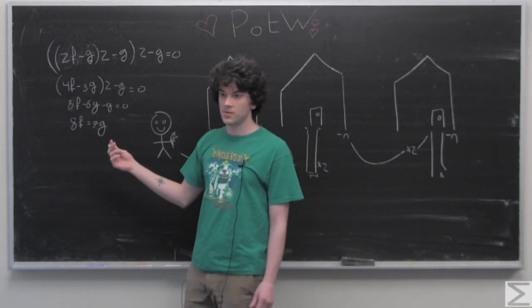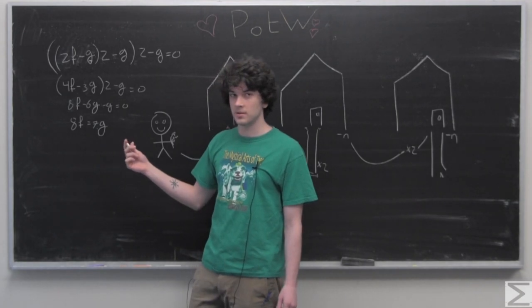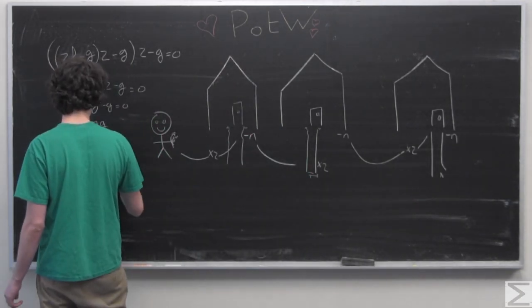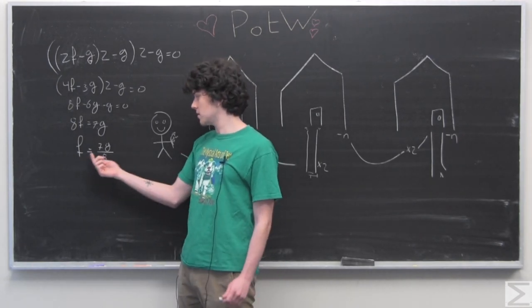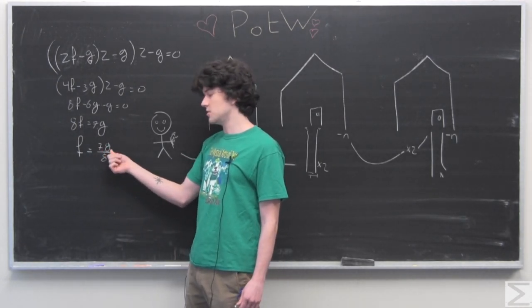We're going to reduce this even further. So the number of flowers that we start with is going to be equal to 7g over 8.